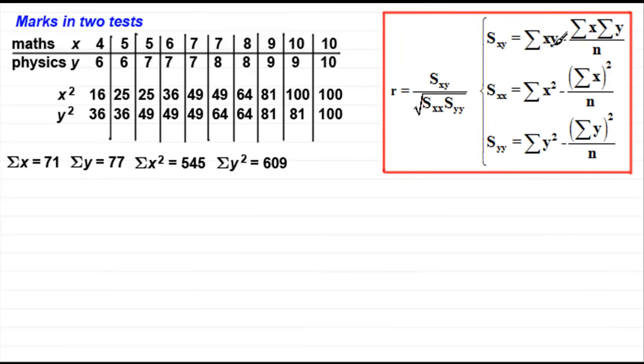We also need sigma xy. So we need to work out what x times y is going to be. So 4 times 6 is 24, 5 times 6 is 30 and so on all the way through. We can add them up and we get sigma xy, which equals 571. Now quite often this takes a bit of time to do. And so you'll quite often find in questions that they will give you these values here, which are often called summary statistics. So look out for that and it will save you having to do all of these calculations in here.